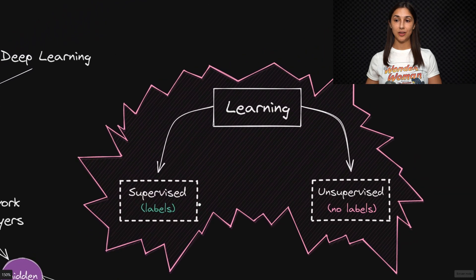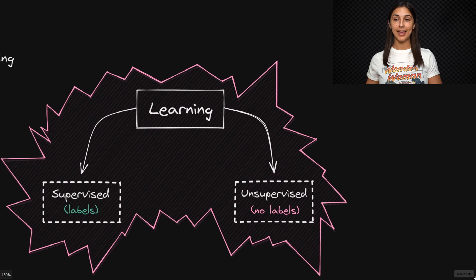Now this learning that takes place can be broadly categorized as either supervised learning or unsupervised learning. With supervised learning, the data that is supplied to the network is labeled, whereas with unsupervised learning tasks, the data is unlabeled.